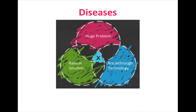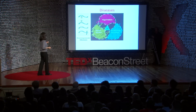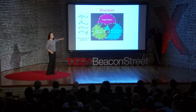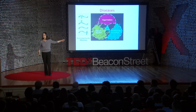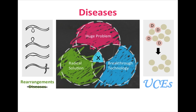The huge problem, in the Solve for X spirit, is that there are thousands of diseases and many, many genes, and we're tired of studying them disease by disease and gene by gene. The radical solution is to skip disease-specific strategies, focus on rearrangements, and help cells recognize when they've made a bad rearrangement. Our technology is something that's been in you and honed for hundreds of millions of years: ultra-conserved elements.